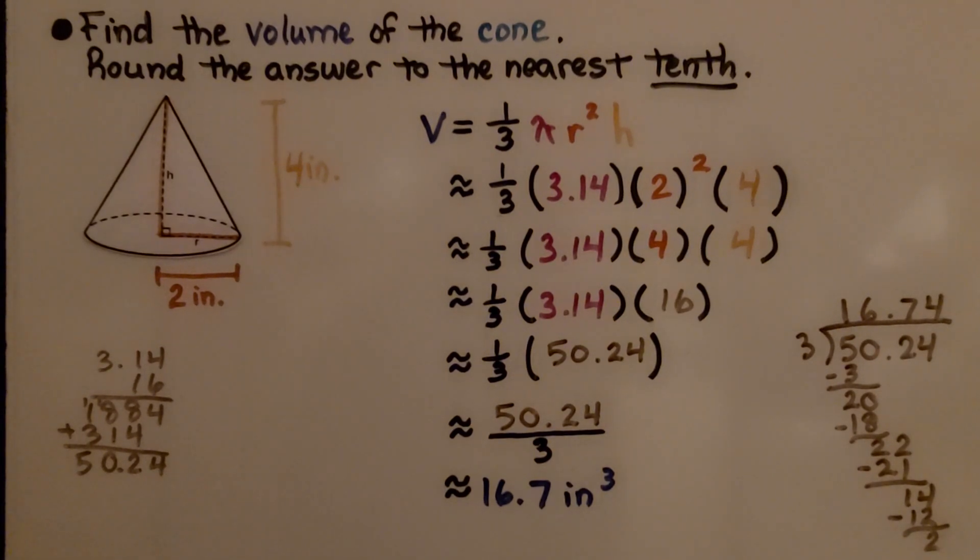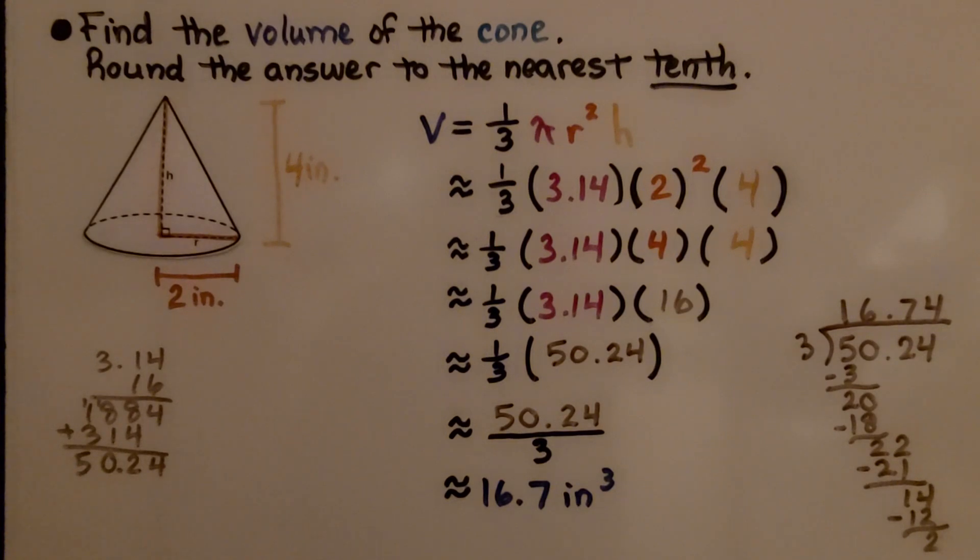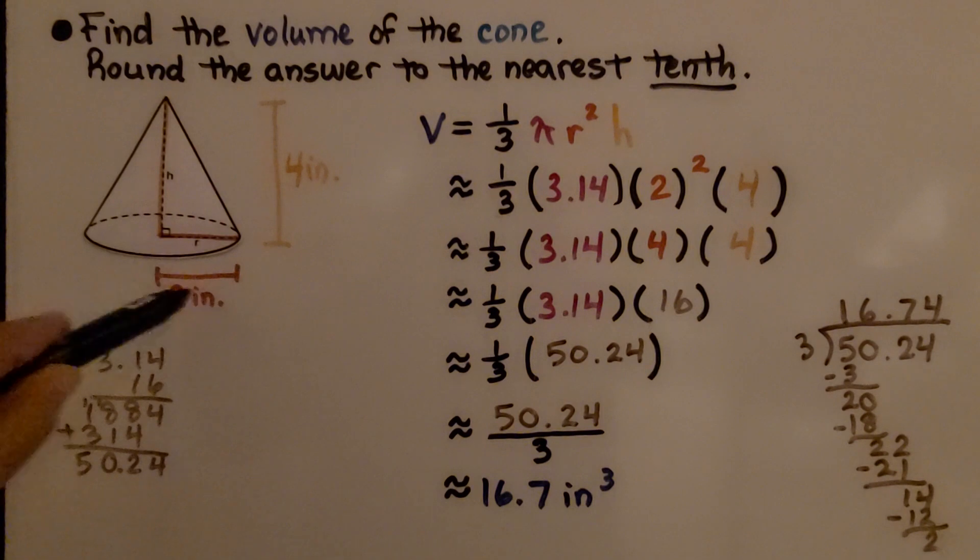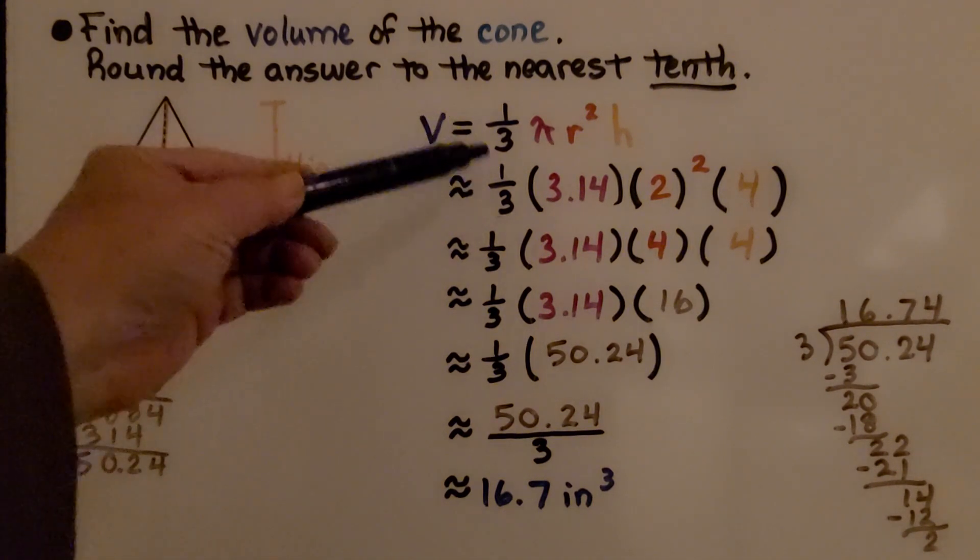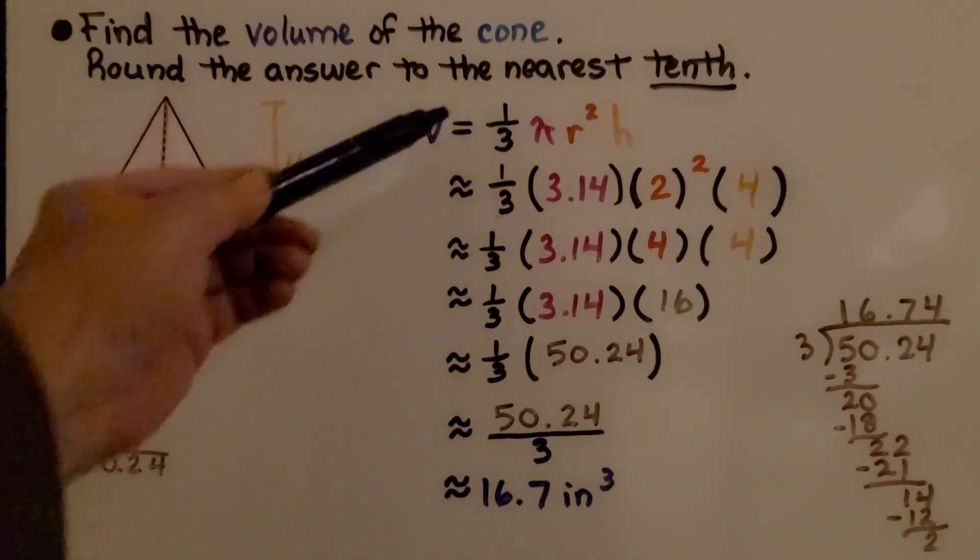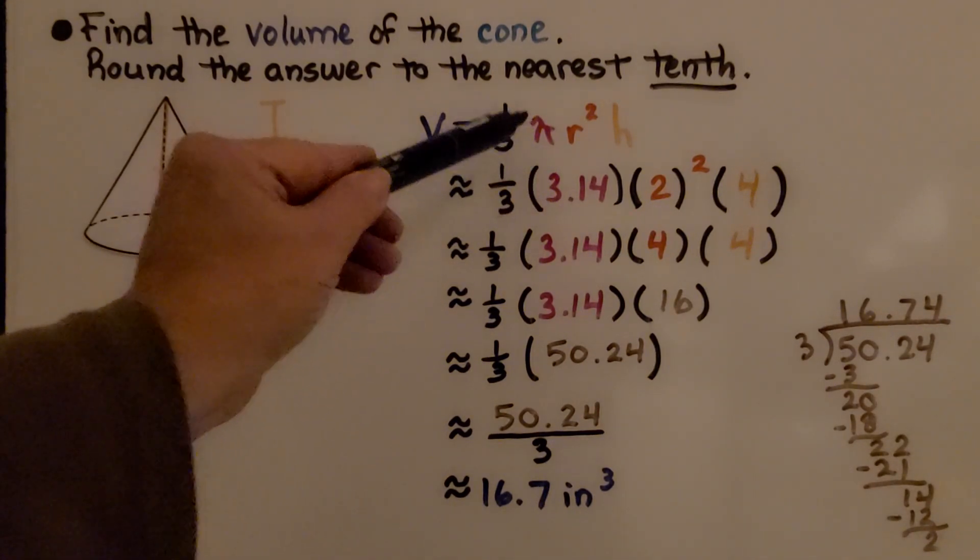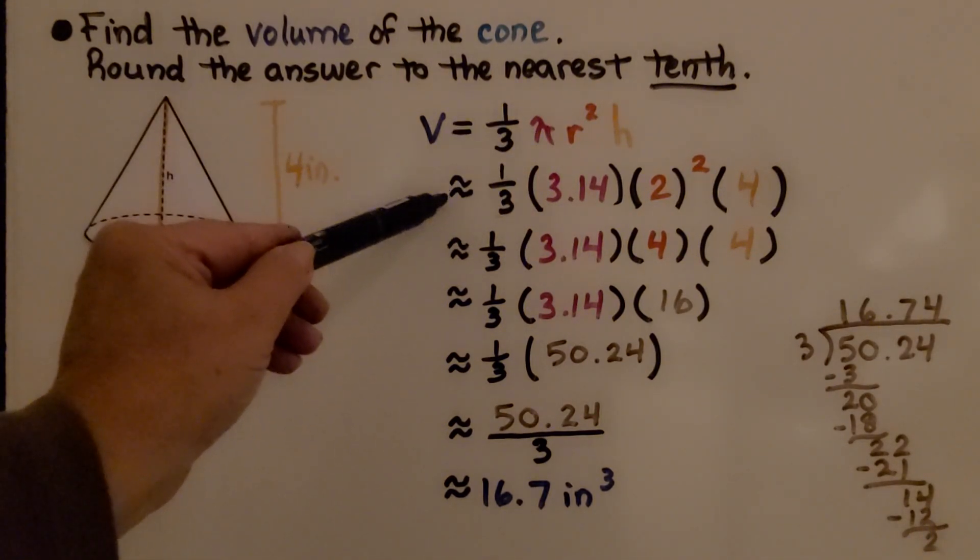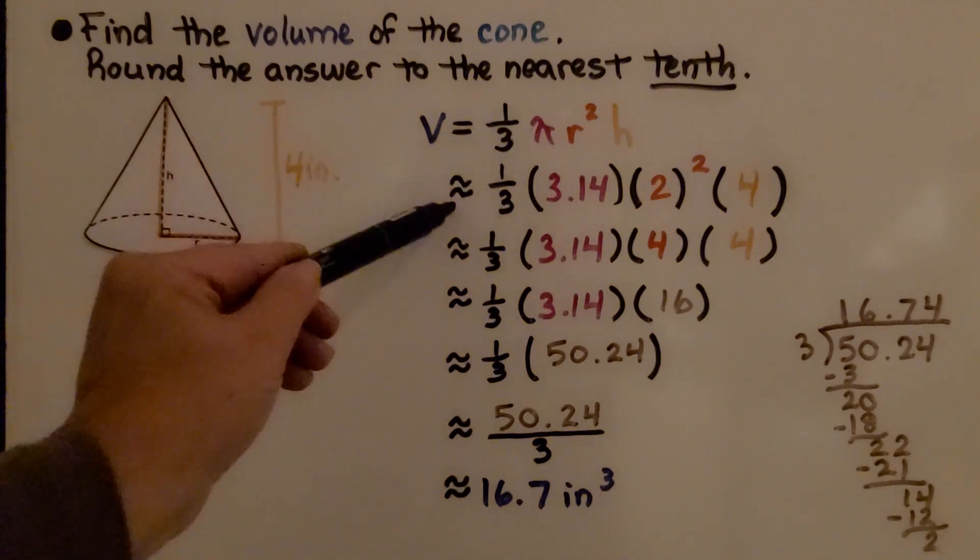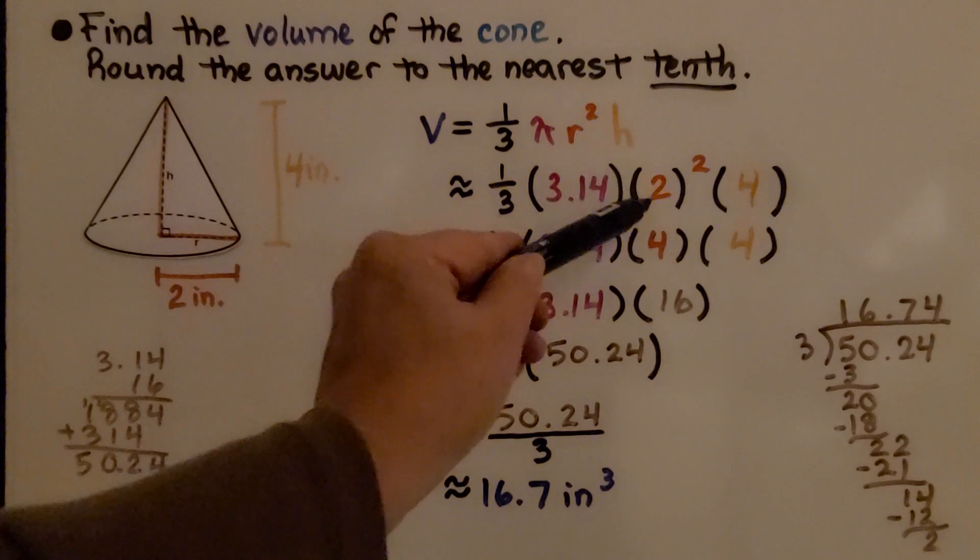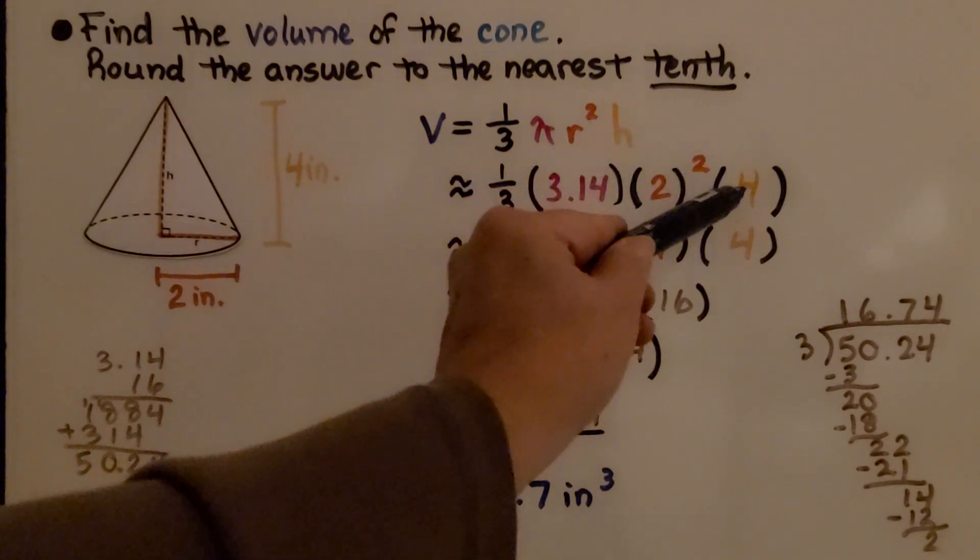Here it's telling us to find the volume of this cone, round the answer to the nearest tenth. We see that it has a height of 4 inches and a radius of 2 inches. We substitute the values into the formula and using 3.14 for pi, we have an approximation symbol here now because we're not using all the digits of pi. We know the radius is 2 so instead of r squared, we have 2 squared. The height is 4.